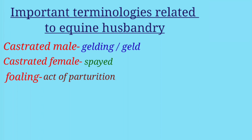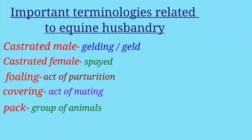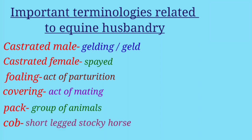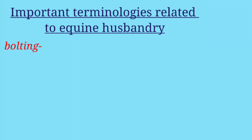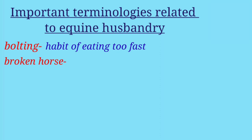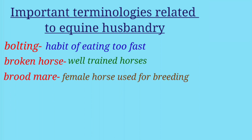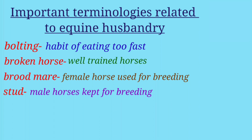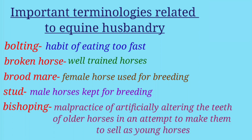'Foaling' means the act of parturition. 'Covering' means the act of mating. 'Pack' is the group of animals. 'Cob' refers to short-legged, stocky horses. 'Bolting' is the habit of a horse eating too fast. 'Broodmare' is the female horse used for breeding. 'Stud' refers to male horses kept for breeding. 'Bishoping' is the malpractice of artificially altering the teeth of older horses in an attempt to make them sell as young horses.